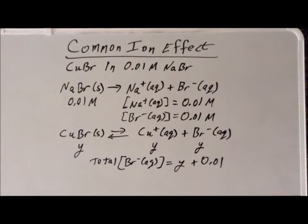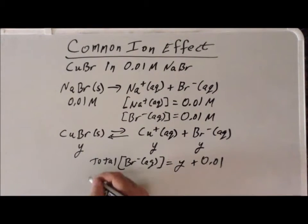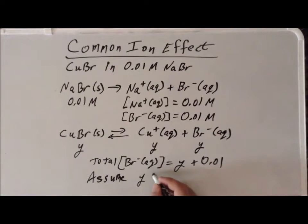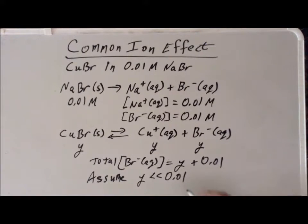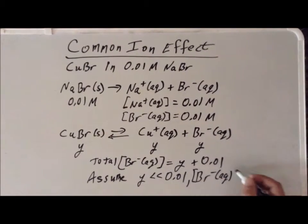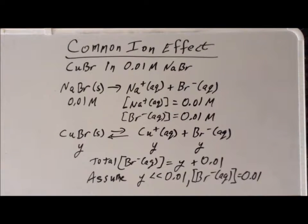We could solve using that full expression, but we're going to make an assumption: we assume that Y is very, very small compared to 0.01. With that assumption, the concentration of bromide is simply 0.01 molar. This is our key step, and we must explicitly write out the word 'assume' and state what we've assumed. At the end of the problem, we must verify that the assumption was justified.